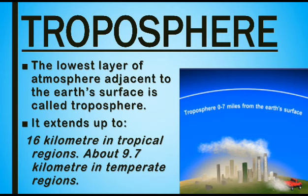First of all, in this layer, the temperature of air decreases with increasing altitude. Secondly, the layer contains dust particles and pollutants that escape up from the earth. Up to 90% of the earth's water vapor and clouds are found in this layer, and all the climatic and weather changes occur due to changes in this layer.